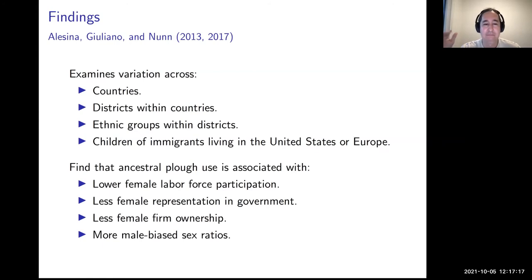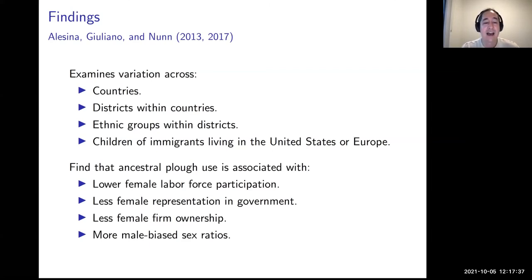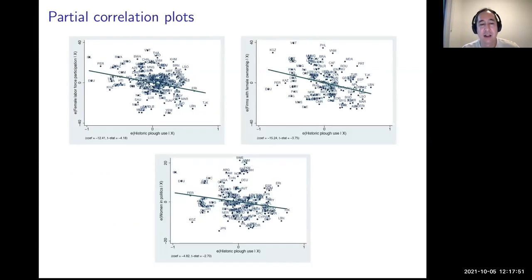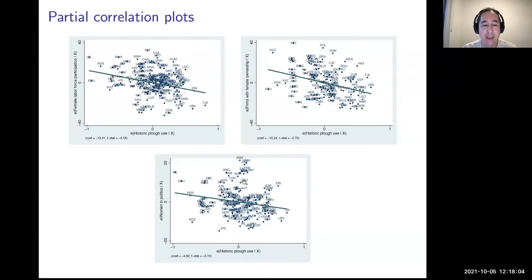Consistently, a history of plow agriculture is associated with less female labor force participation — but not only that. It's also linked to less representation of women in government, less entrepreneurship by women, and less female firm ownership. These are partial correlation plots controlling for income, education levels, and a whole host of other things, showing negative relationships with female labor force participation, firm ownership, and women in politics.